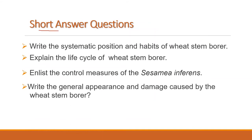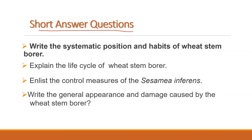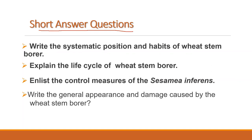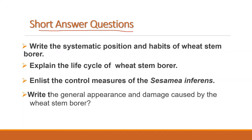Short answer type questions which you have to answer in a single paragraph, sometimes with a diagram: write the systematic position and habits of wheat stem borer; explain the life cycle of wheat stem borer; list the control measures of Sesamia inferens; and write the general appearance and damage caused by the wheat stem borer. Make a PDF file and send it to your teacher in the college. Goodbye, thank you.